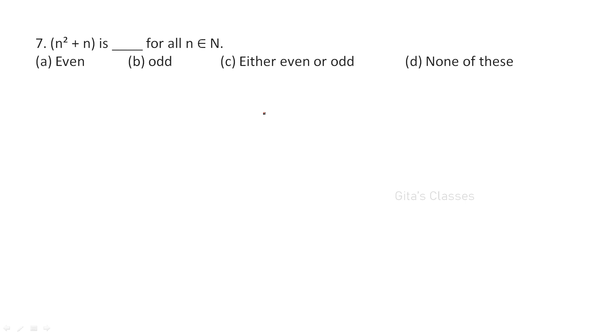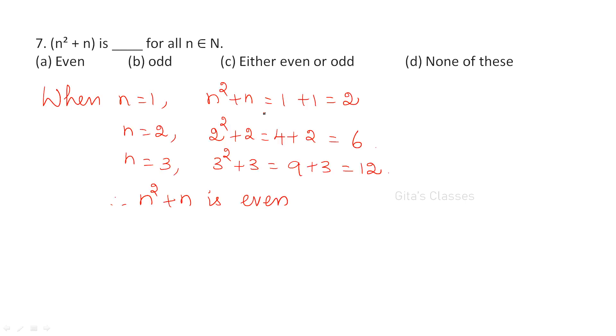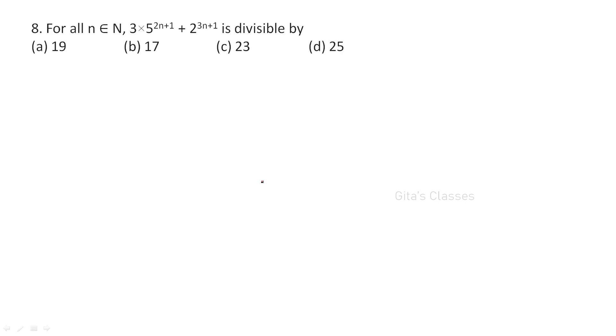Next, n² + n is always even. Just by substituting numbers you can see: for n = 1, 2, 3, everything is even.